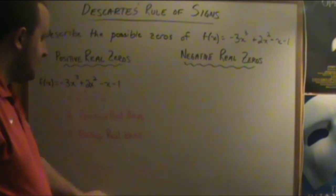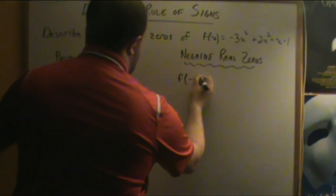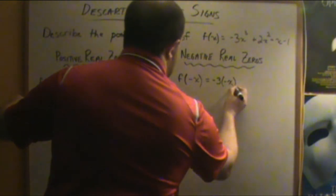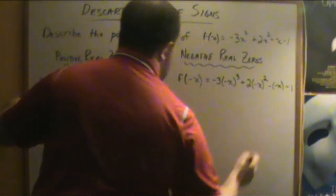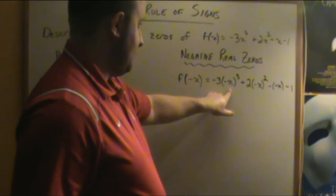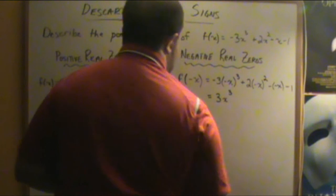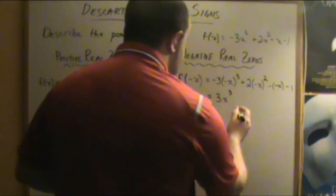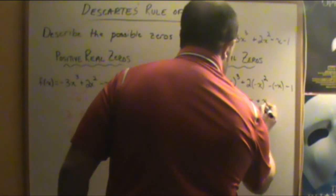Now, to look at the possible number of negative real zeros, we take the function f and evaluate it at the opposite value of x — replacing every x with a negative x. Negative x cubed produces a negative number, so a negative times a negative gives a positive: we get 3x cubed. Positive 2 times negative x squared — since negative x squared is positive — that term stays positive. Double negative makes a positive, and then minus 1.